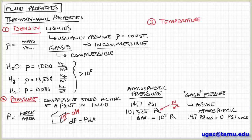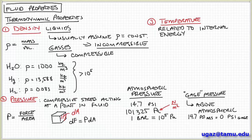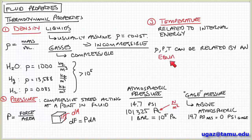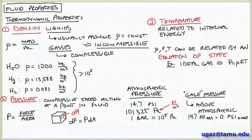Temperature is another important property, related to the internal energy of thermal motion inside the molecules or atoms of the fluid. There is always motion at these length scales unless you reach 0 Kelvin, and the Kelvin scale is proportional to this internal energy. These thermodynamic quantities — pressure, temperature, and density — can be related by equations of state. One simple example is the ideal gas law: P = ρRT. More complex equations of state give more accurate relationships between these variables.